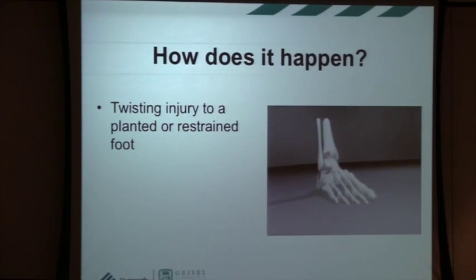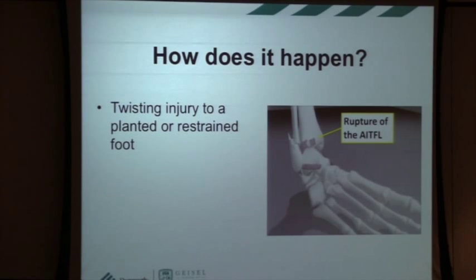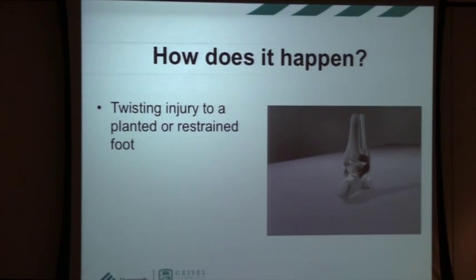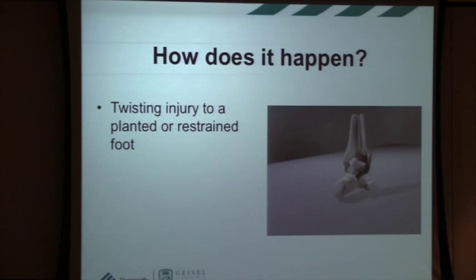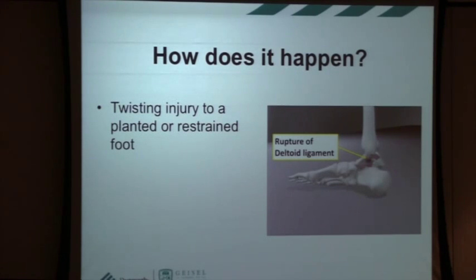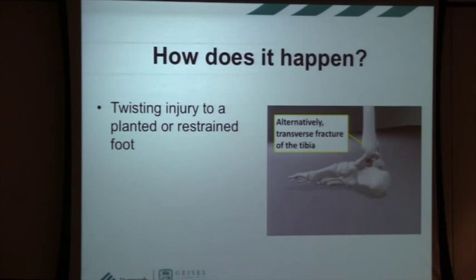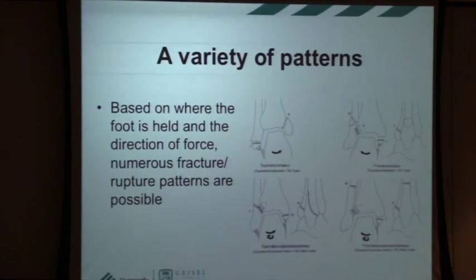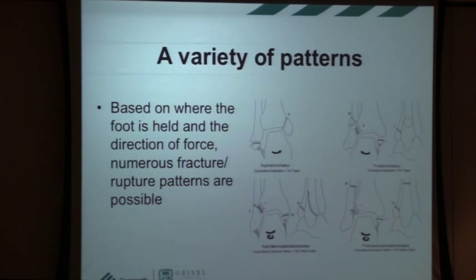How does it happen? Essentially it's a twisting injury on a planted or restrained foot. This little video shows what happens if your foot is planted and you have a rotational force around it — it shows how force travels around your ankle with the most severe type of injury. There are a bunch of patterns classified by what position your foot is in and the direction of force at the time of injury, and different patterns produce different severity of injuries.